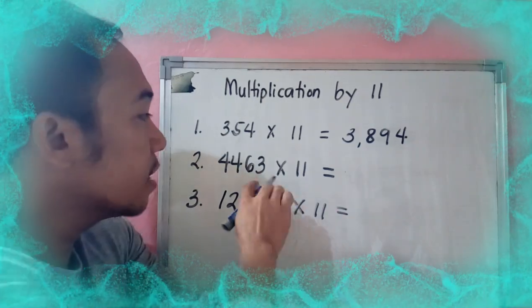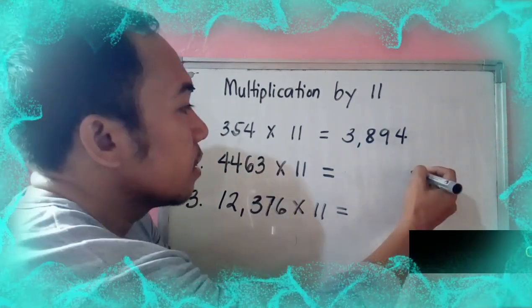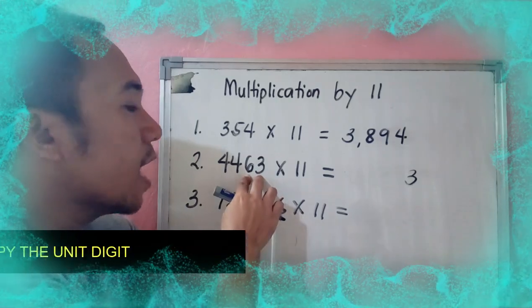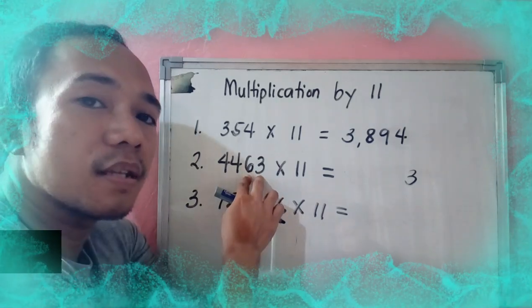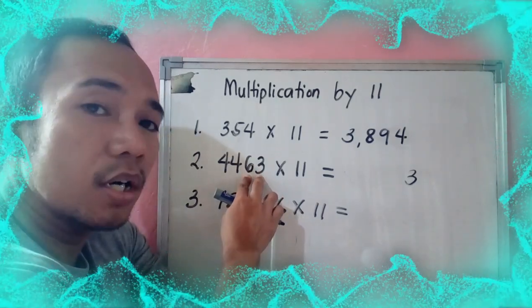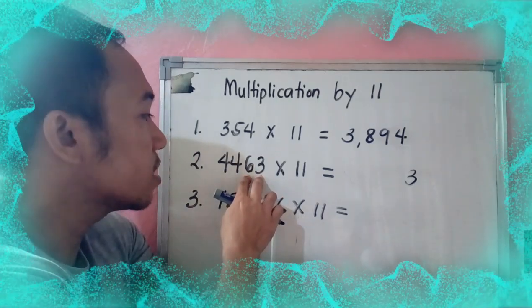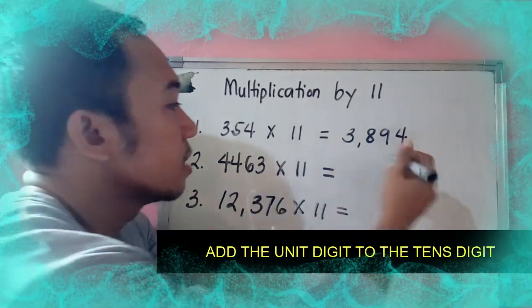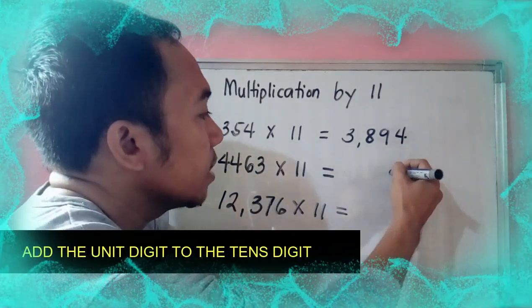Let's proceed to the next example. So 4,463 times 11. Again, copy the unit digit: 3. Then add 3 to its next number, which is 6. 3 plus 6 is 9.